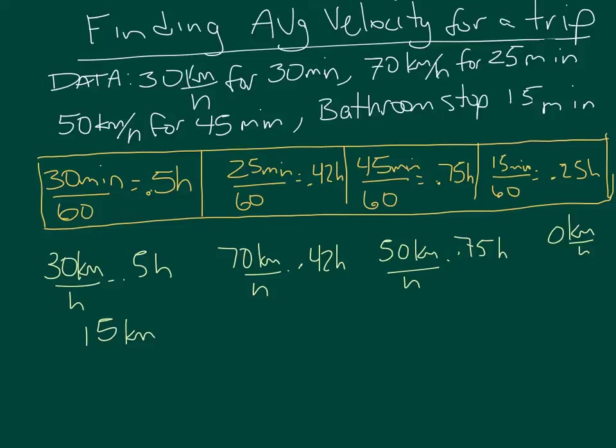If I did 70 kilometers per hour for 0.42 hours, I multiply those together and get 29.4 kilometers. 50 kilometers per hour for 0.75 hours puts me at 37.5 kilometers, and 0 kilometers per hour for a quarter of an hour is 0.